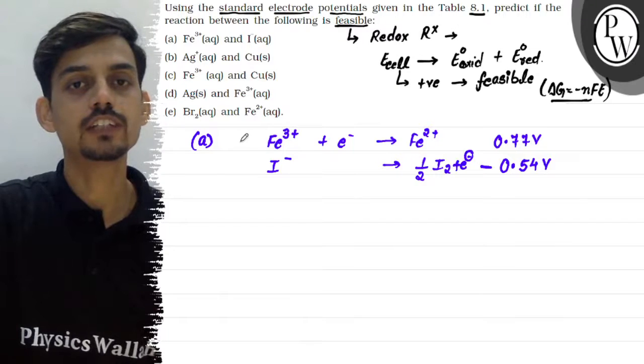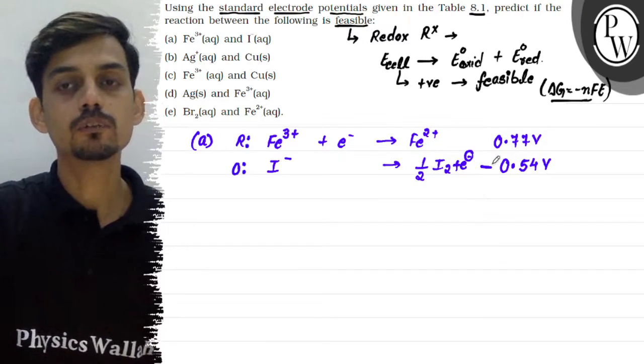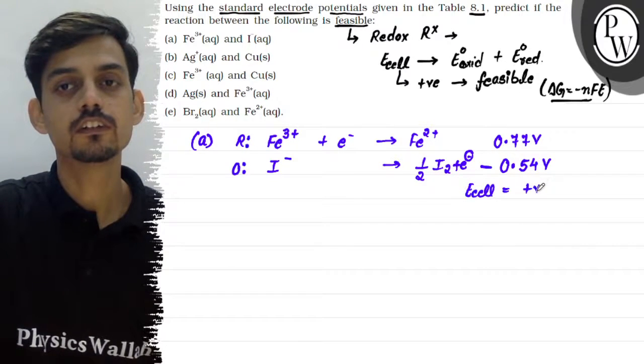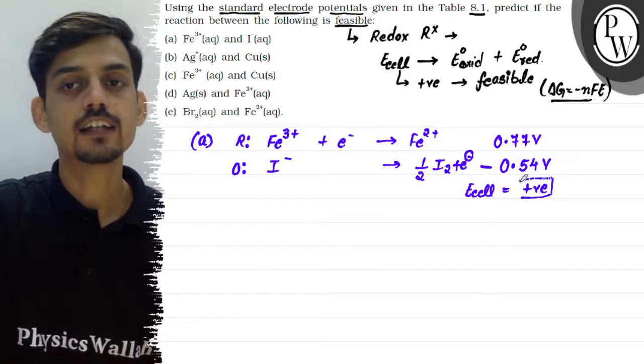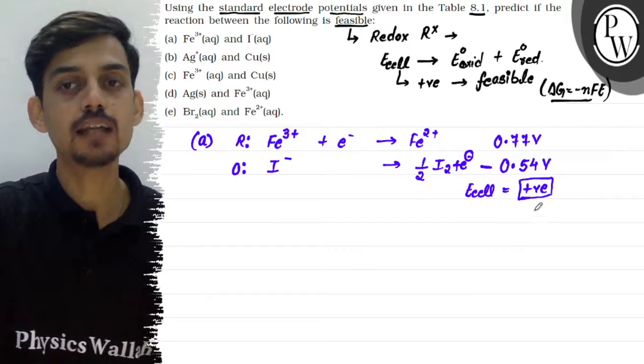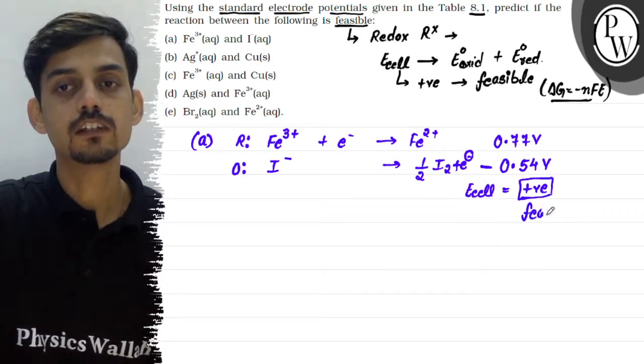Now, dono half oxidation and reduction reactions hain. So agar in dono potentials ko add karenge, then cell potential will be positive. And that indicates the reaction between Fe3+ and I minus will be feasible. This reaction is spontaneous or feasible.